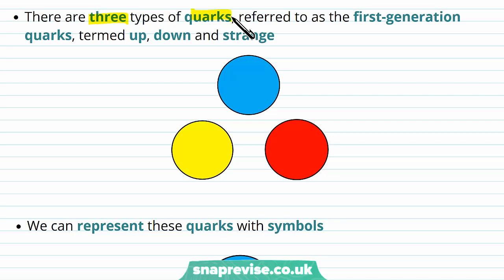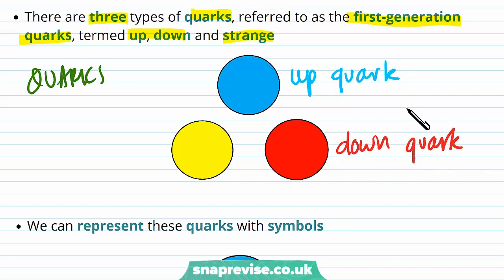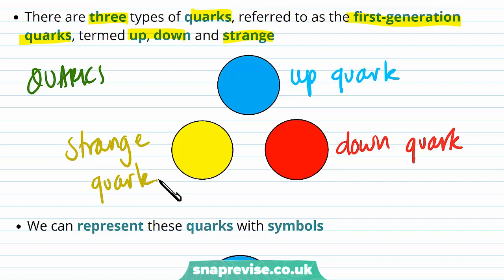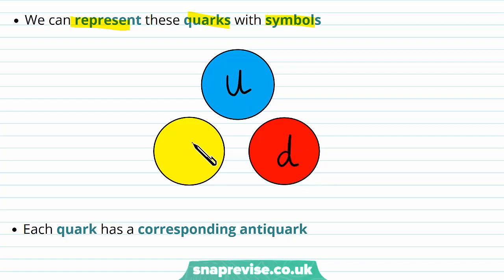There are three types of quarks referred to as the first generation quarks, termed up, down, and strange. Our blue circle represents the up quark, our red circle represents the down quark, and our yellow circle represents the strange quark. We can represent these quarks with symbols: for our up quark we use a U, for our down quark we use D, and for our strange quark we use an S.